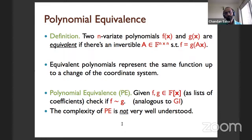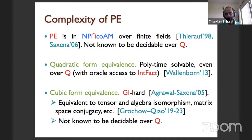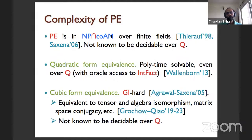A natural computational question arises: given two polynomials f and g, how fast can we check whether they are equivalent? We assume f and g are given verbosely as lists of coefficients and exponent vectors. This is a computational problem, and you can naturally view it as an algebraic analog of the graph isomorphism problem. It turns out the complexity of polynomial equivalence is not very well understood, despite the fact it has been studied for many years.